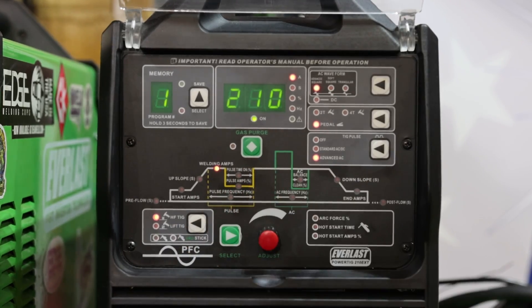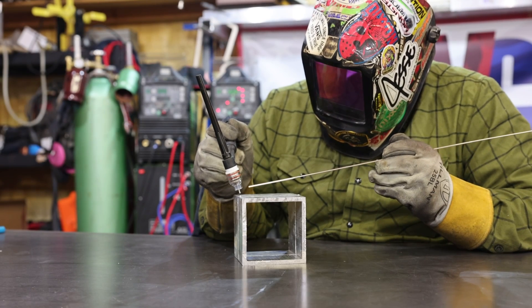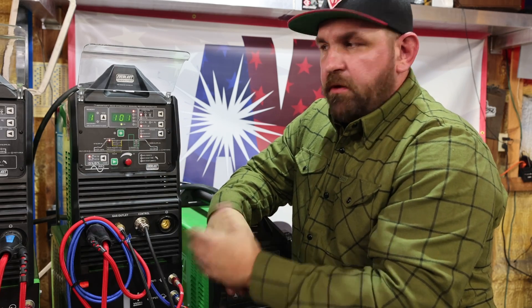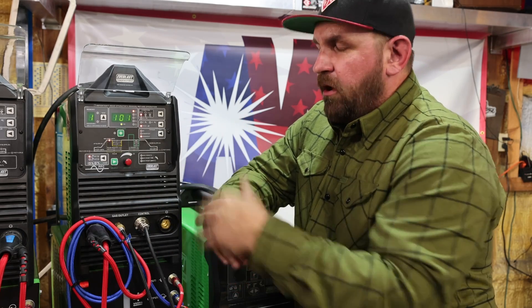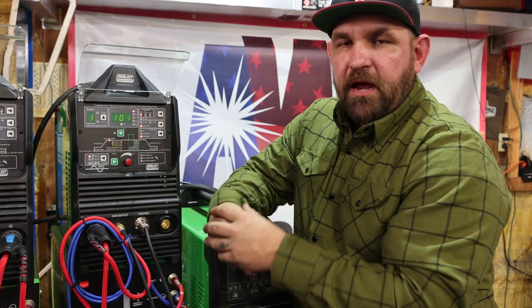We've got some quarter inch plate. We're going to do some butt welds and I've got some quarter inch square tube that we're going to weld up. So you guys can see the penetration benefits of advanced AC pulse. After we do the advanced AC, we're going to do some regular AC at 210 amps. Show you guys the difference in penetration and how the puddle reacts.